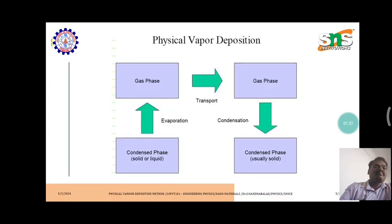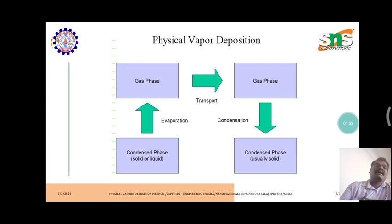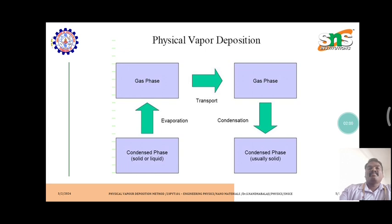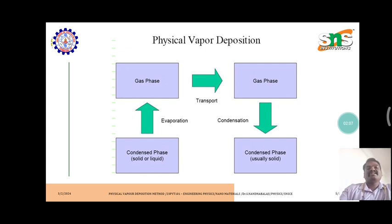In physical vapor deposition, three different types of work are needed: transportation, condensation, and evaporation. First, in the evaporation step, condensed phase material — solid or liquid — is inputted to the machine. It is evaporated like a gas and transported to another gas phase, followed by condensation of the solid phase materials.